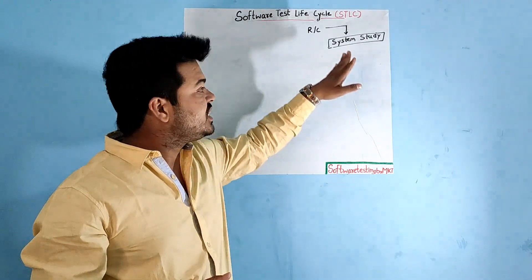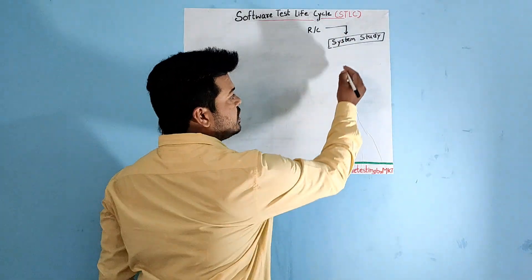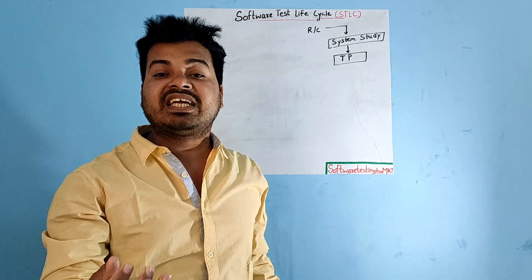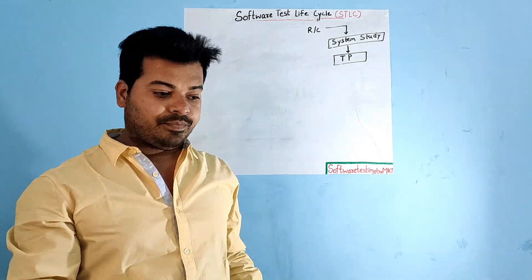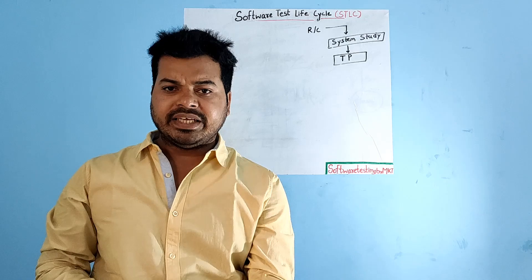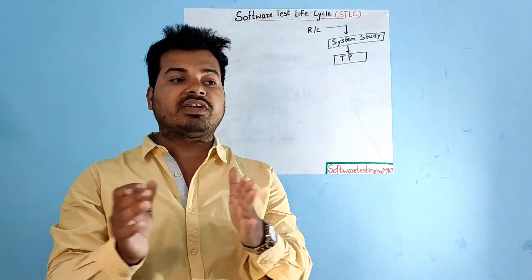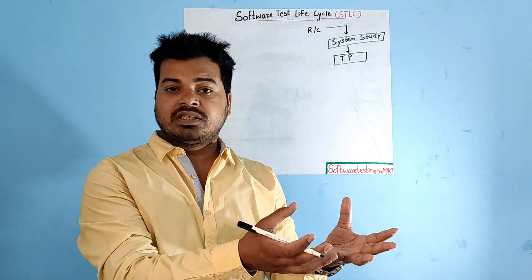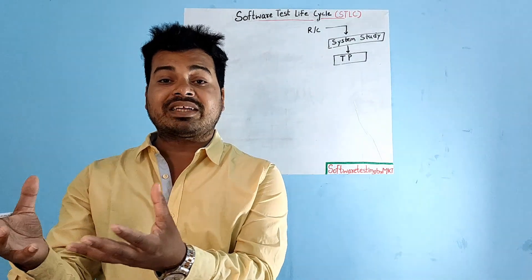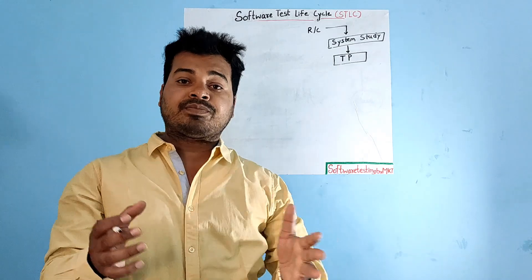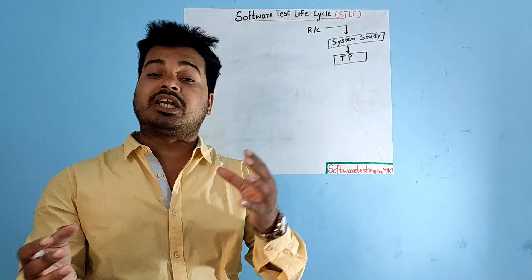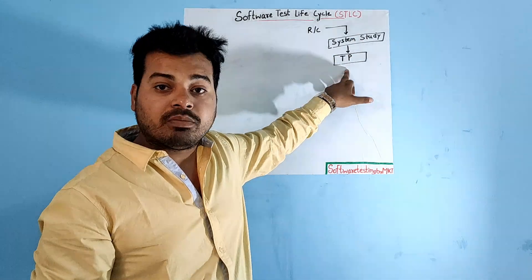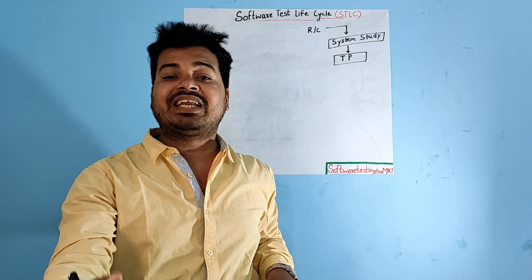The second stage of STLC is the test plan. The test plan covers all future testing-related activities. It defines how many testing engineers are going to work on a particular release, which engineer is assigned to which module, how many days testing will take, which bug tracking tool will be used, and which automation tool will be used. It is a document that covers all future testing related activities.